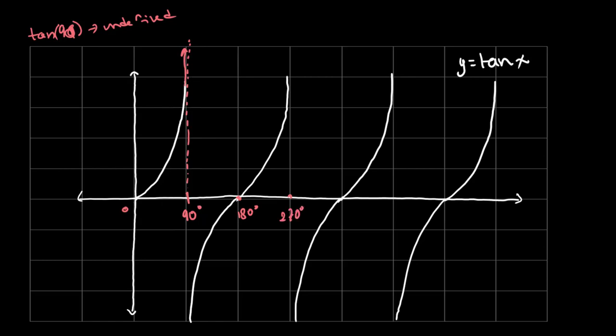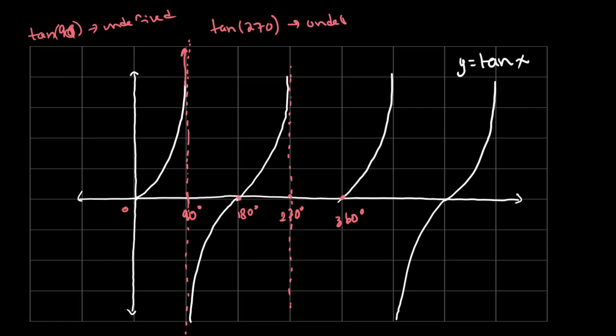On the graph, 180 degrees is here, 270 degrees is here, and 360 degrees is here. Likewise, at 270 degrees there is another asymptote — the graph will never intersect that line either, so tan of 270 is also undefined.